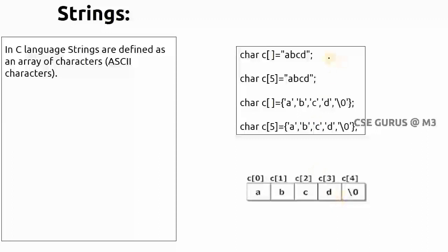All characters are stored in a character array and the last character must be the null character. You can declare a string without giving the size, or you can specify a size. If you want to represent each individual character you can use single quotes, but you must also represent the null character. When using double quotes for a group of characters, there is no need to represent the null character explicitly. This is how you represent a string in C — a collection, or sequence, of ASCII characters.